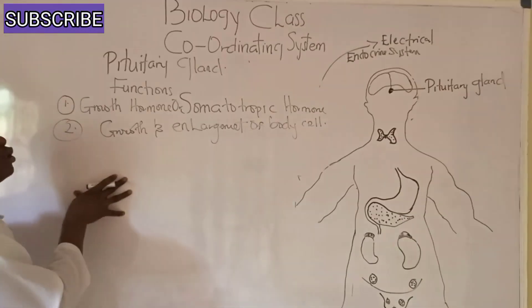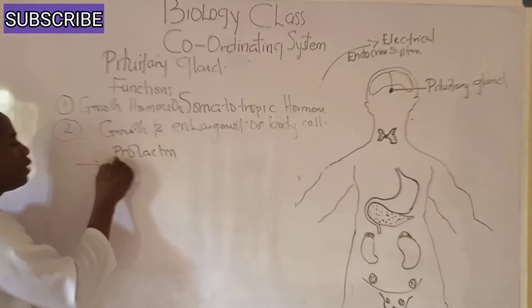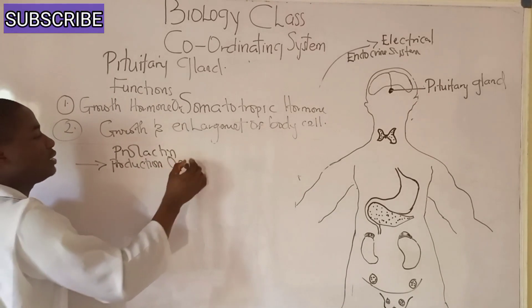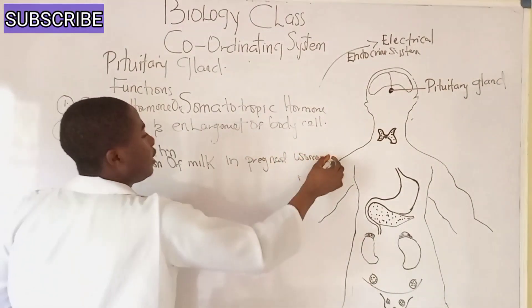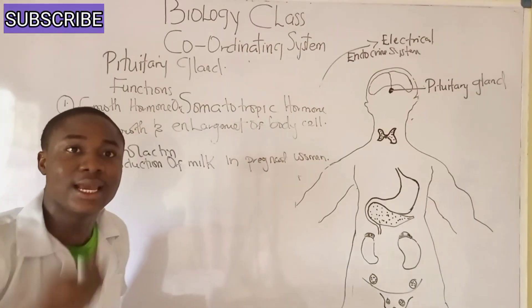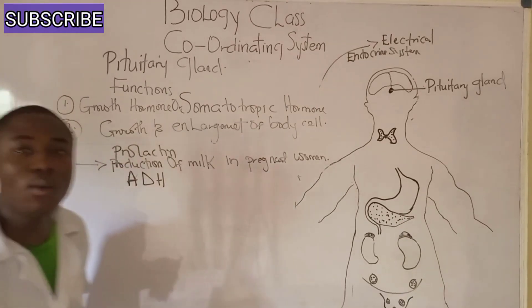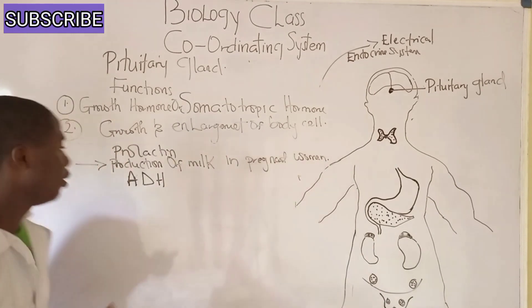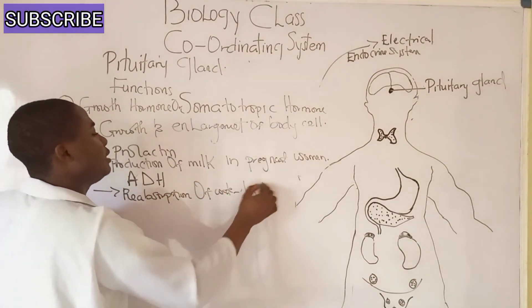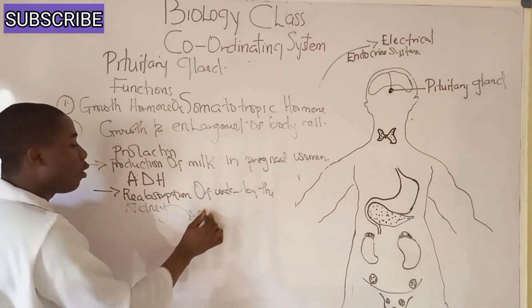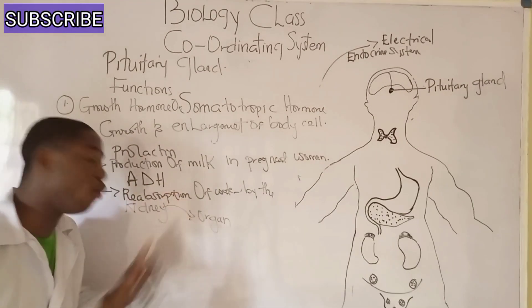The prolactin hormone helps during the production of milk in pregnant women. The antidiuretic hormone (ADH) helps during the reabsorption of water by the kidney.